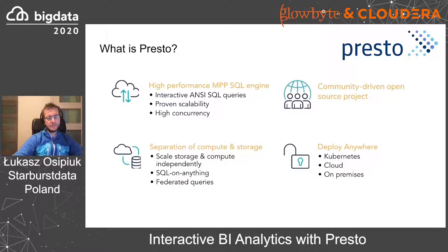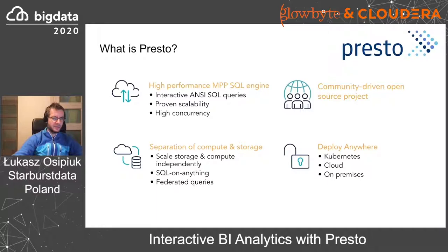You can deploy Presto basically anywhere. We've seen successful deployments on bare metal on-premises, in virtualized environments on-premises, and in public clouds. Now, Kubernetes is really the way to deploy Presto in essentially any of those environments. It gives you a lot of flexibility and you don't have to be tied to any specific platform. You can move a Presto analytical system from one place to another and run it where the center of gravity of your data is.